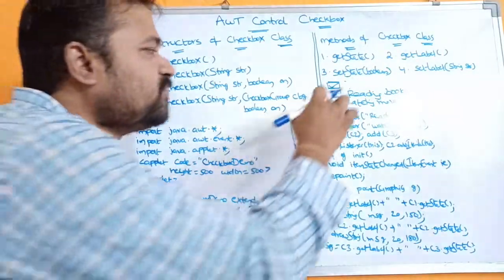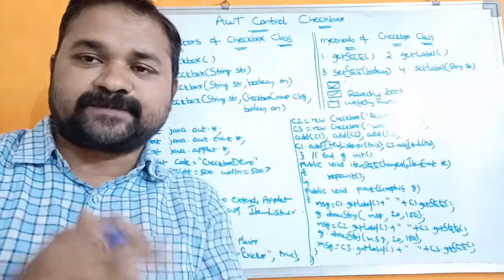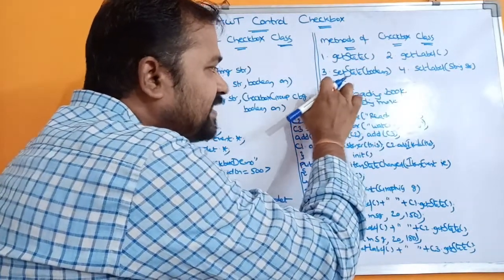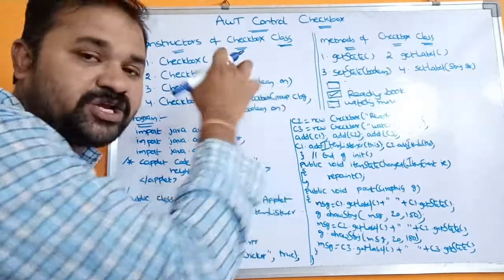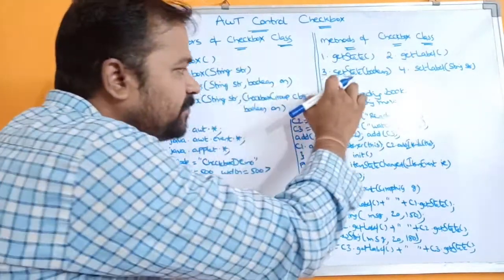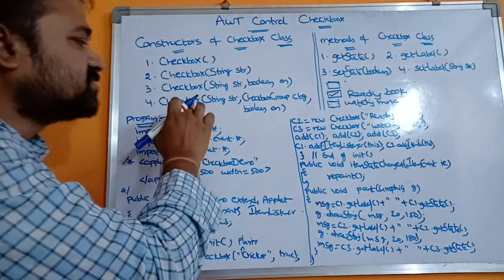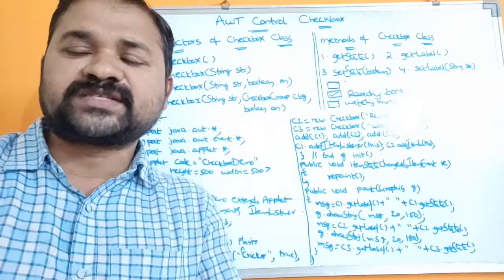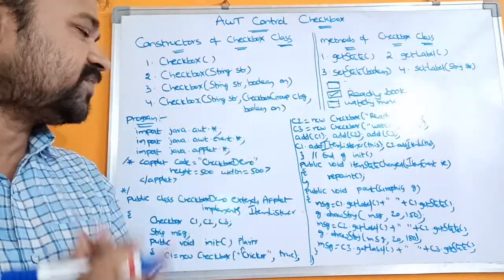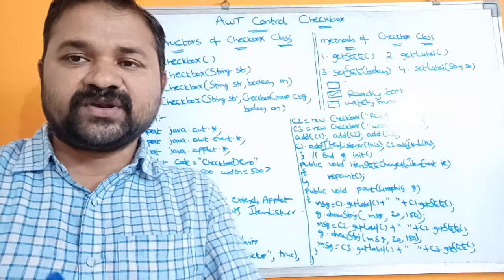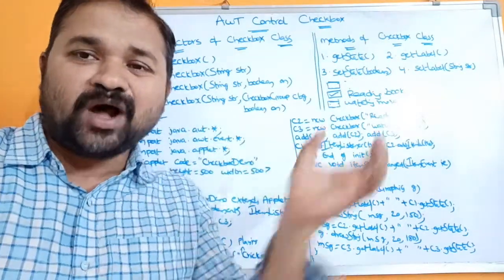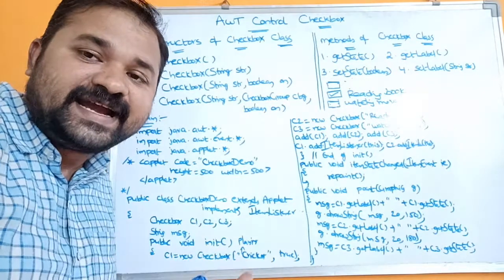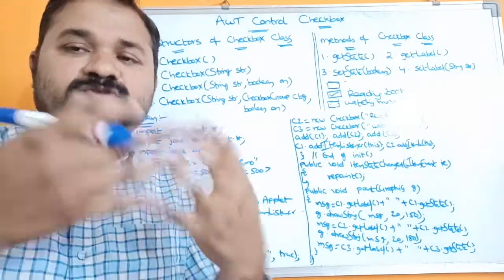The default boolean value is false, so we will get an empty checkbox. If we set the value as true, we will get a tick mark in the checkbox. The fourth constructor is Checkbox(String, CheckboxGroup, boolean). If we want to use a number of checkboxes in a group then we use this one. We will discuss about checkbox group in the next control. In this example all checkboxes are not belonging to a single group, so the checkbox group is null — null indicates there is no group, so we can select multiple options.